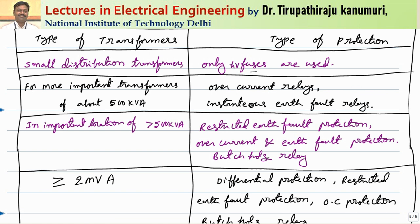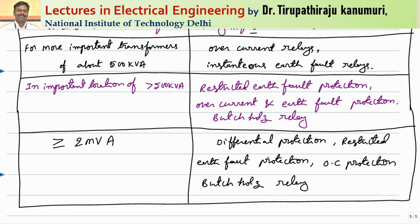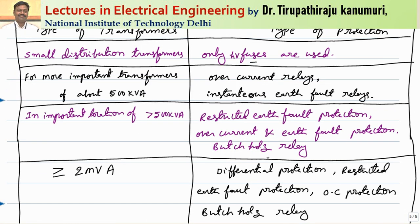For transformer ratings greater than 5 MVA, earth fault protection, over current protection, and Buchholz relays are used. For transformers less than 500 kVA in important locations, over current and earth fault protection are used; otherwise only HV fuses are used. In the next classes, all protection schemes will be covered one by one. The basic need for transformer protection and the different protection schemes have been introduced here.